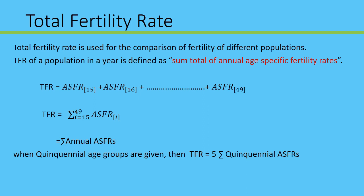As you can notice, there is a formula: TFR is equal to ASFR for 15 years plus ASFR for 16 years plus ASFR for 17 years, continuing up till the last ASFR for 49 years. So for all age groups from 15 to 49 years, you sum the age-specific fertility rates.